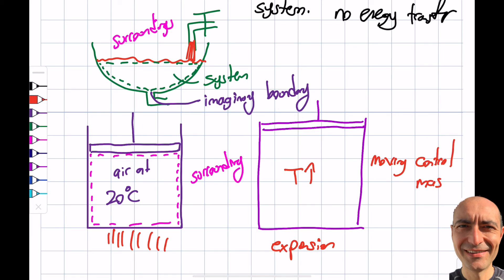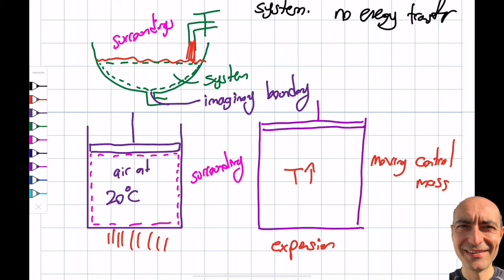This is a moving control mass. Why control mass? Because the piston is sealed — it's still the same air, just now at a higher temperature, say 120°C. It's the same system but the volume has increased because the pressure balanced itself by expanding the volume rather than continuing to raise pressure.